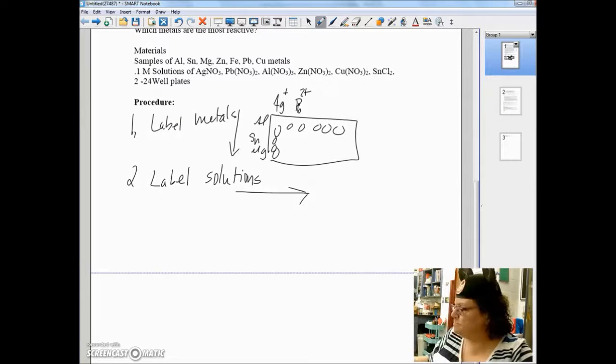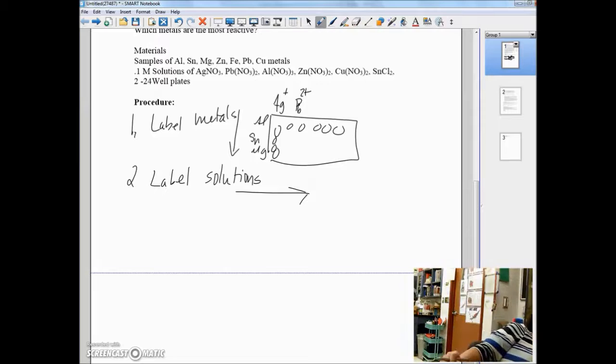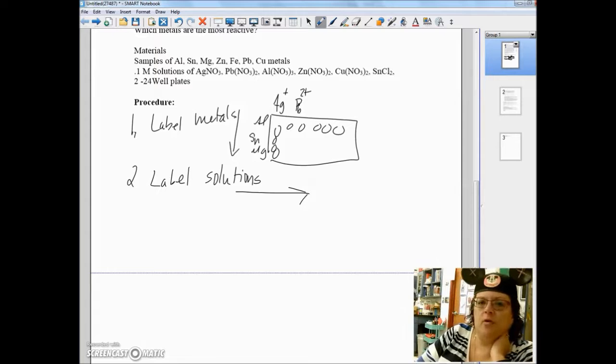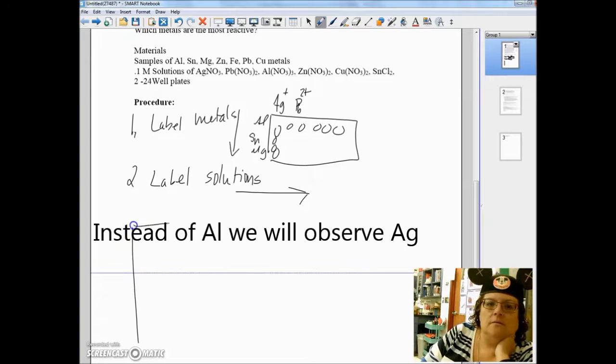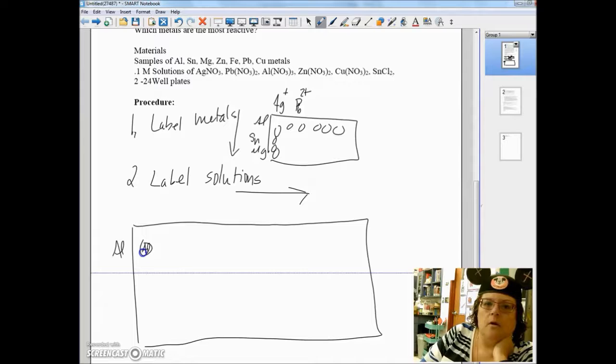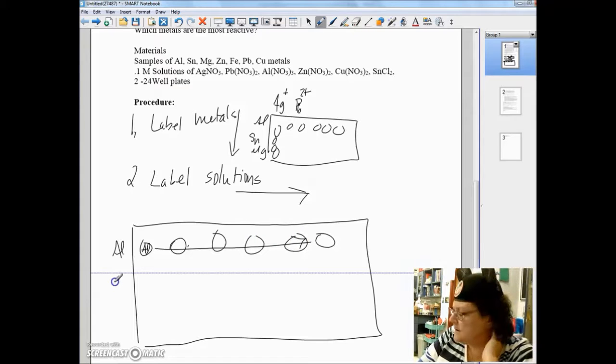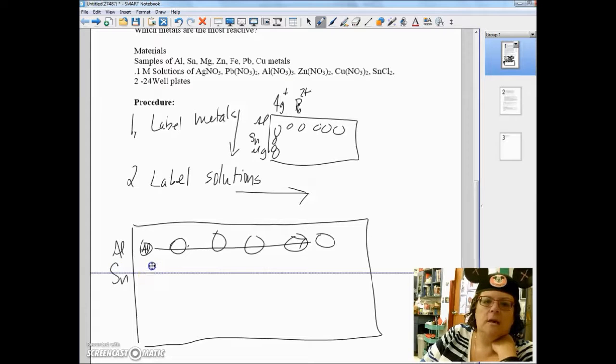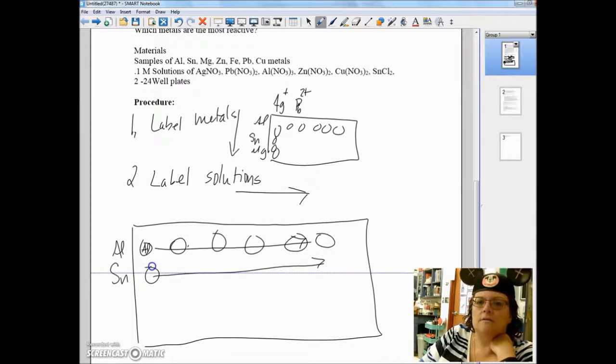Step three: you're going to put a small piece of the metal in the same row that it's labeled. So if our first one is aluminum, we're going to put aluminum all the way across all six wells. And the next one is tin. Same story all the way across. That's step three.